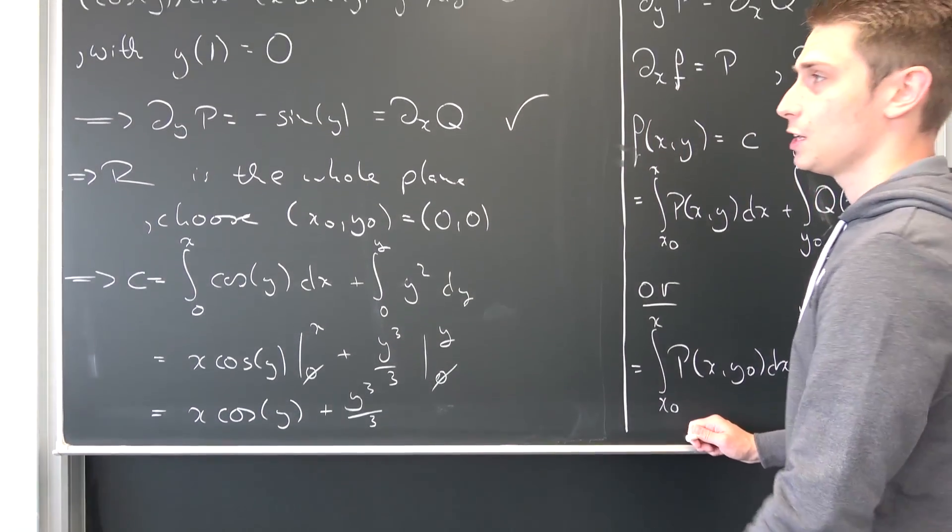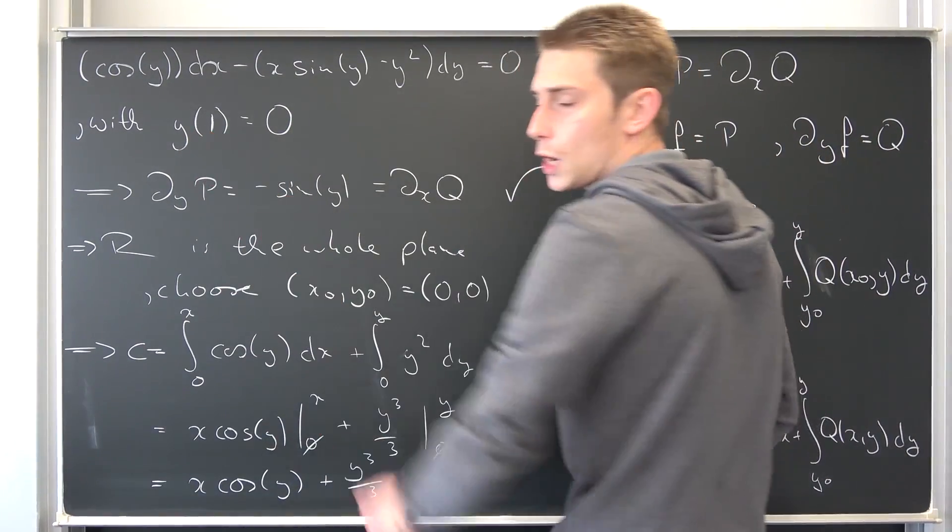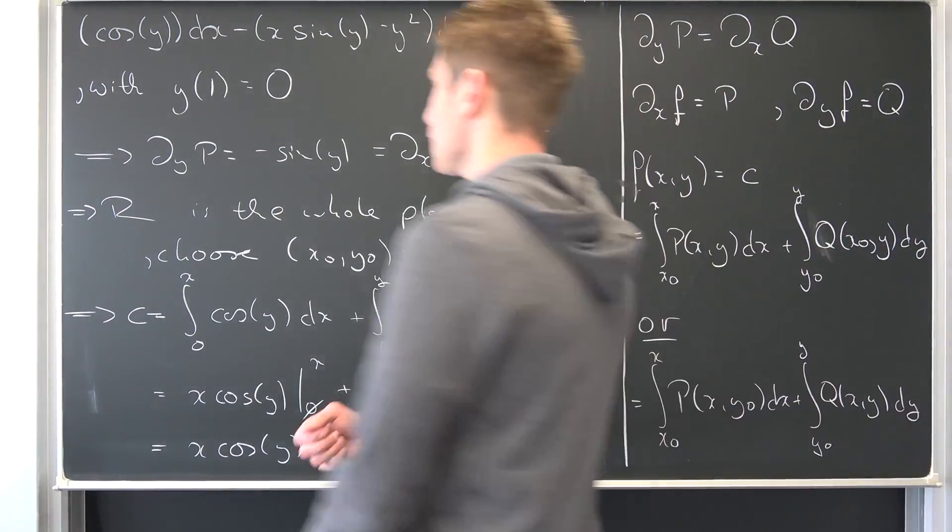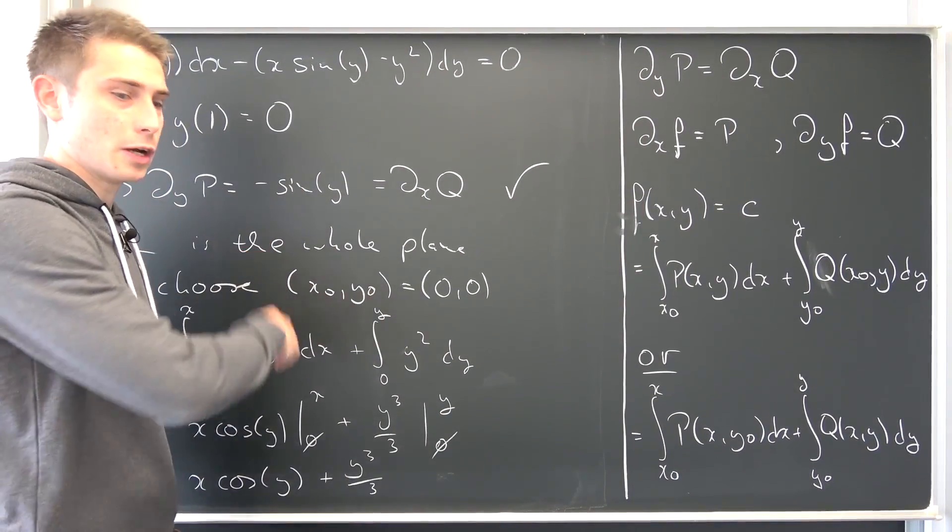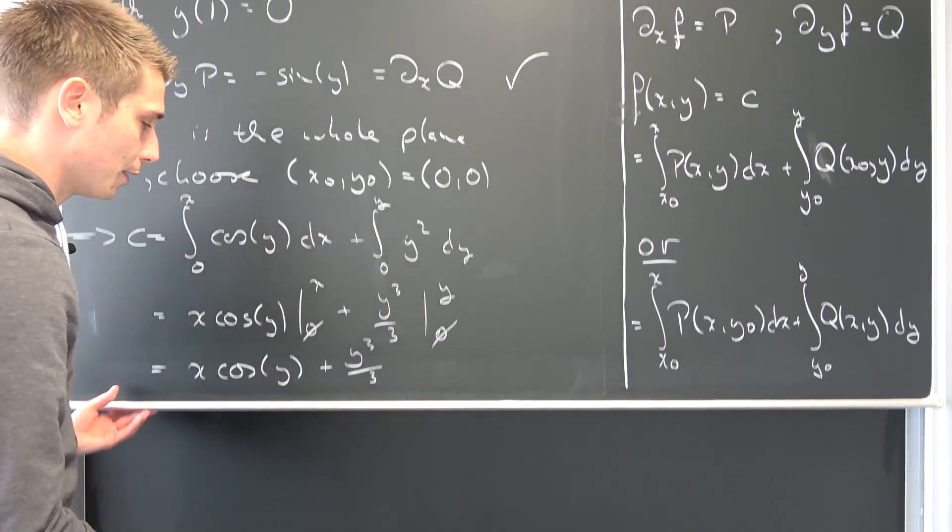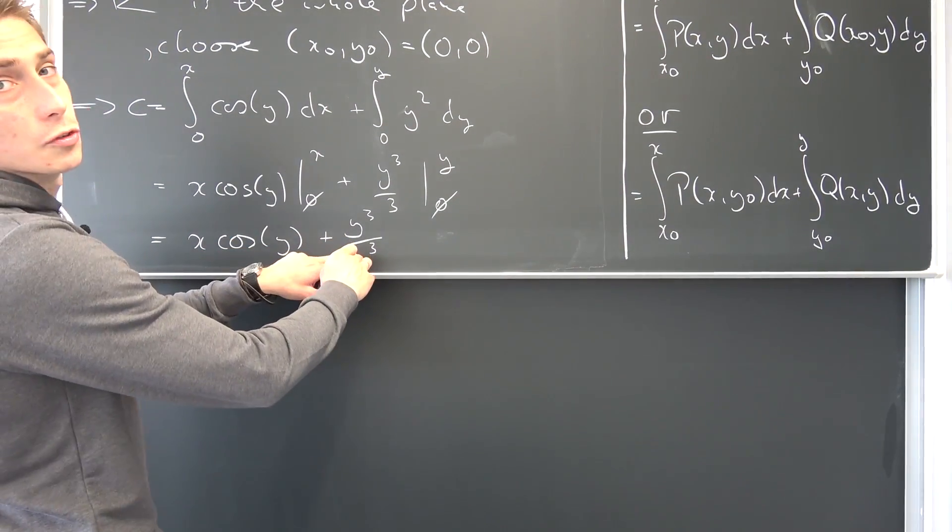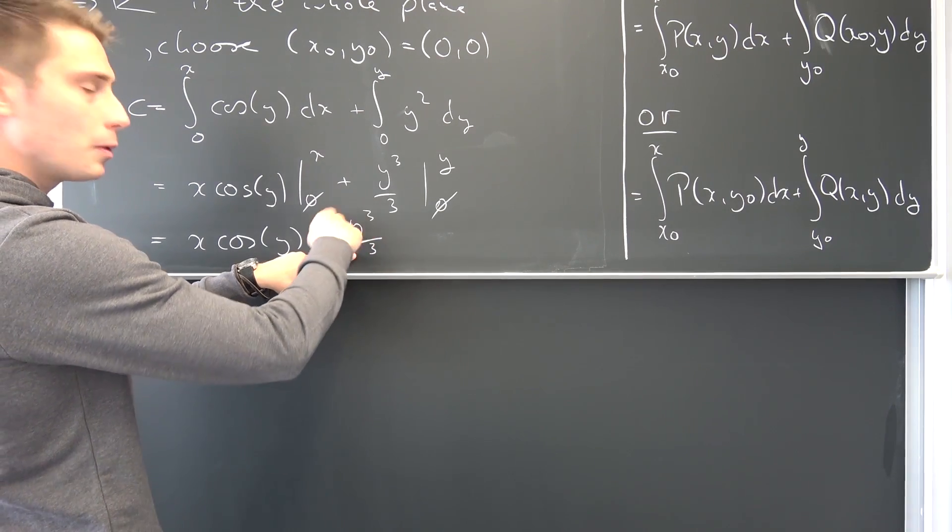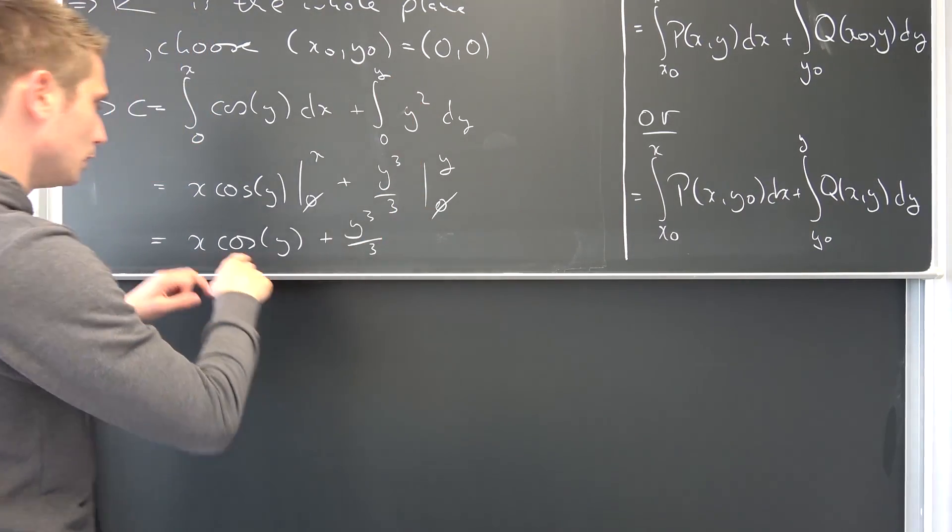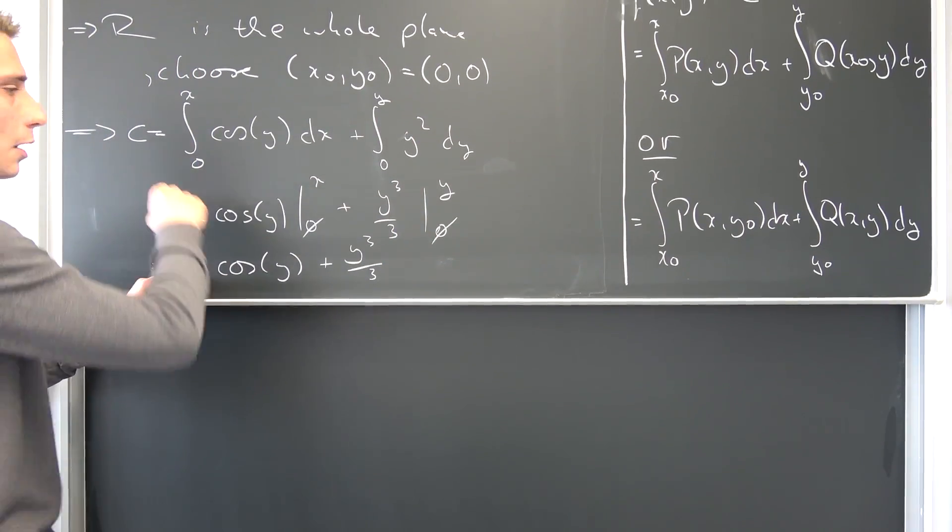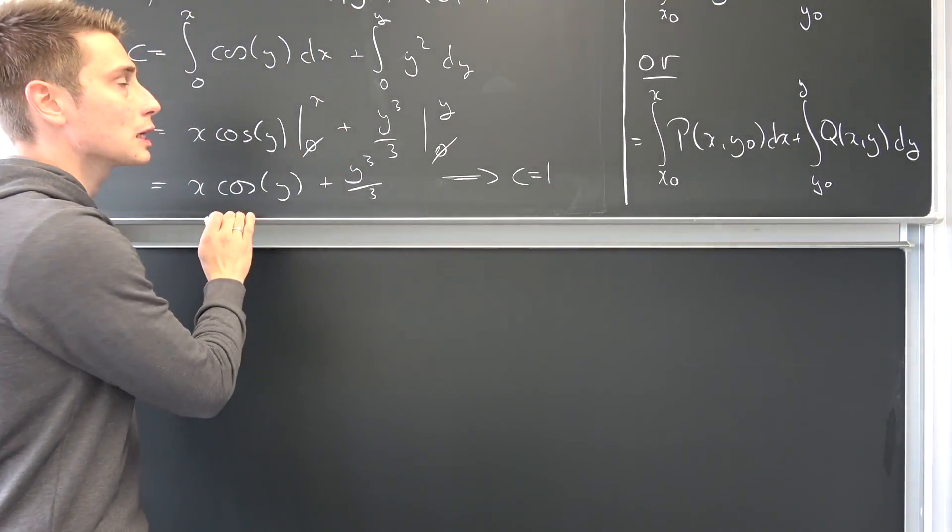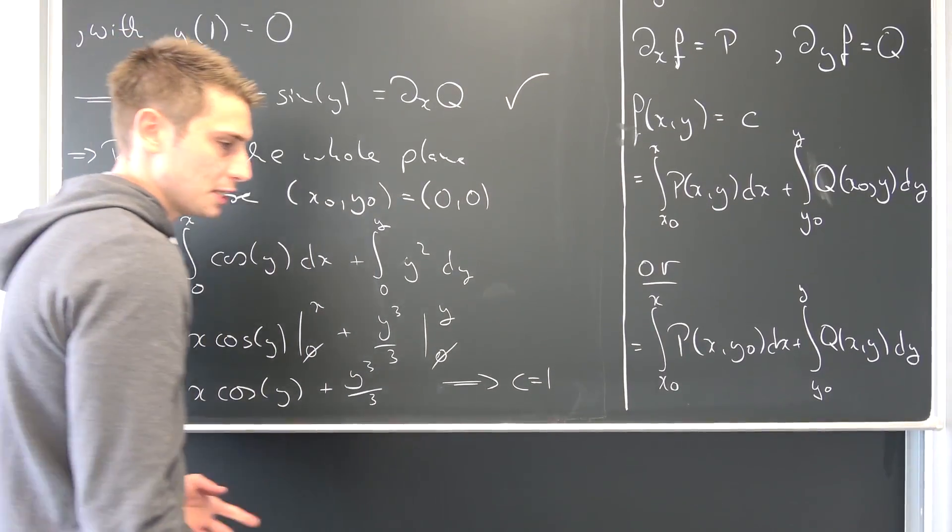Now we still have an initial value problem to solve: y(1) = 0. Easily done. Meaning every time we have a y in this equation, it's going to be 0 and our x is going to be 1. This is going to vanish right here in the initial value problem. Y is equal to 0 and cosine of 0 is nothing but 1, and x is nothing but 1, meaning our C is nothing but 1. Thus our differential equation has been uniquely determined.